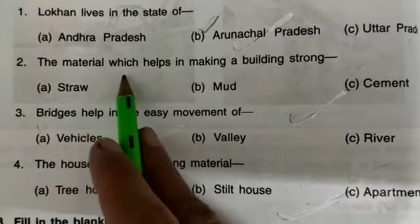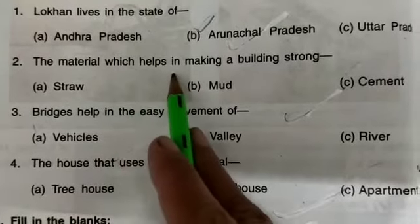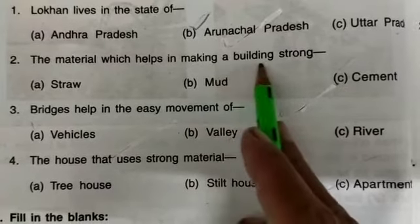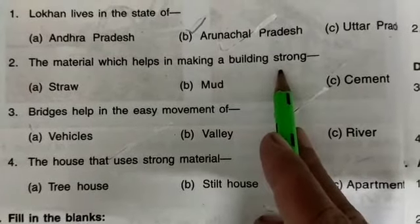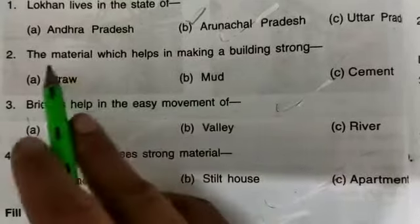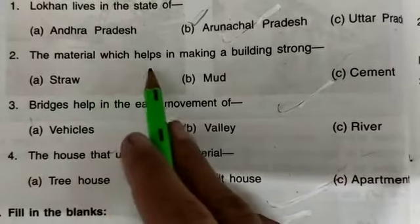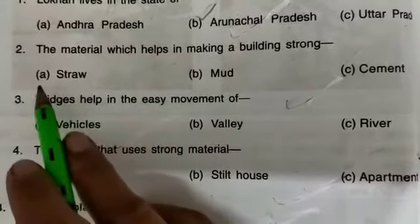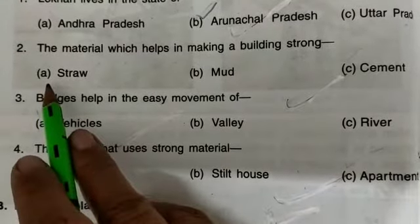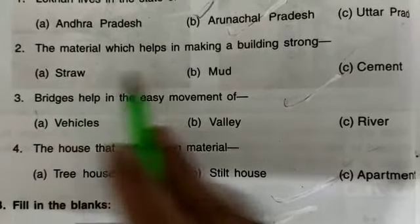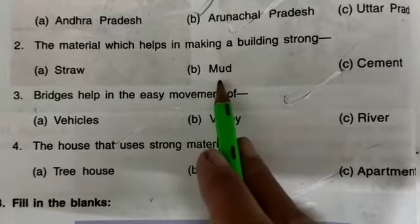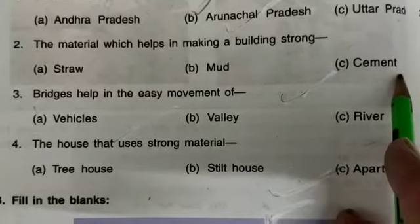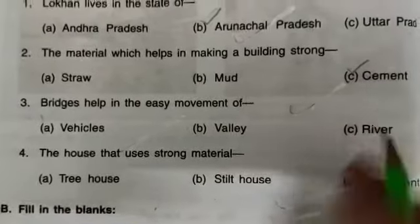The right answer is B, Arunachal Pradesh. Lokhan lives in the state of Arunachal Pradesh. Number two — the material which helps in making a building strong: option A is straw, option B is mud, and option C is cement. The right answer is cement.